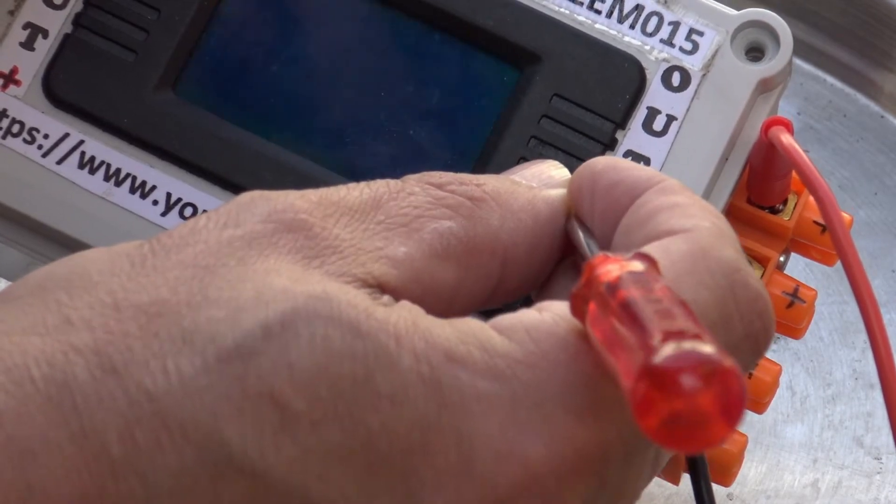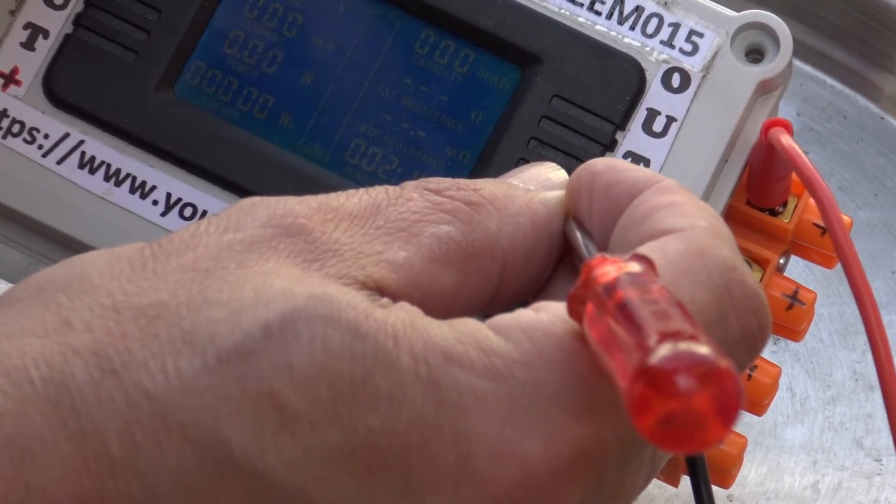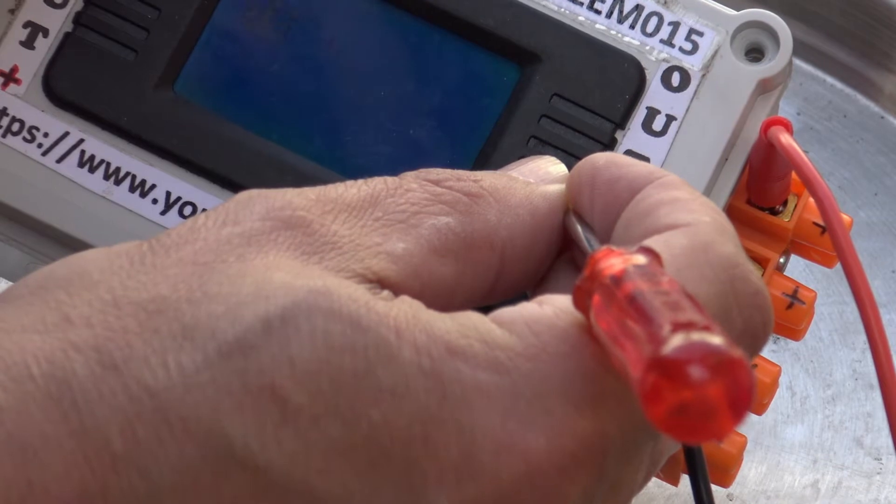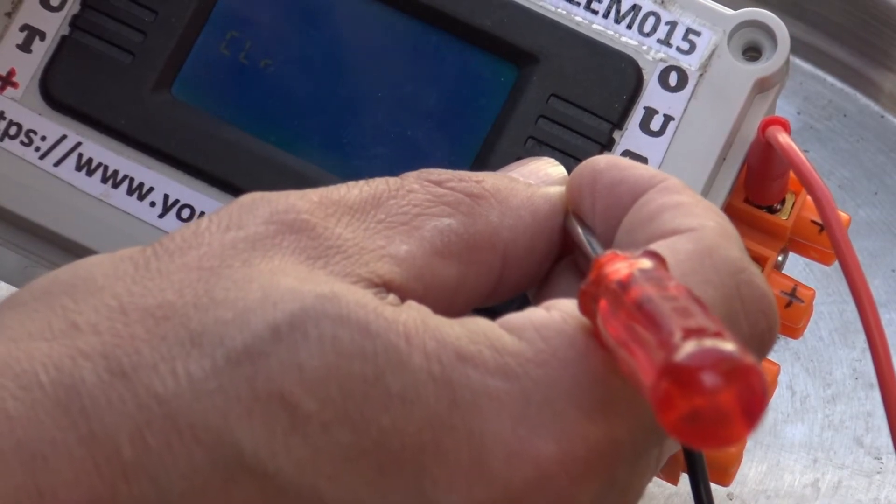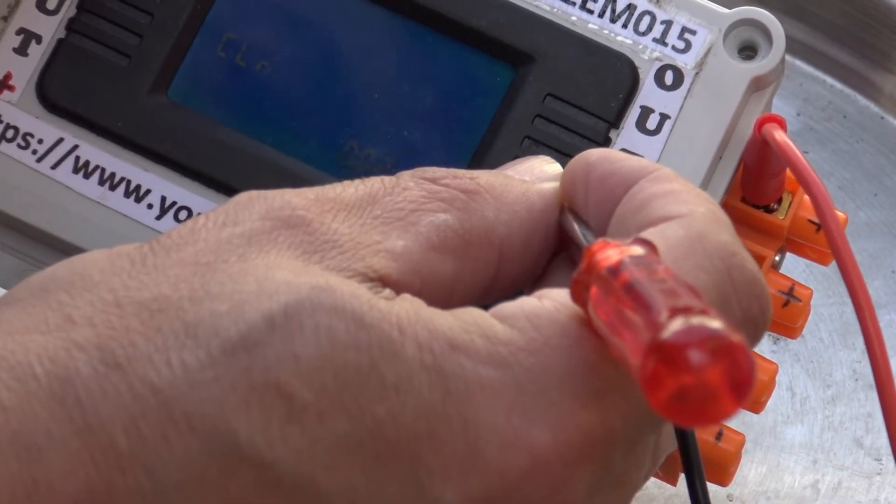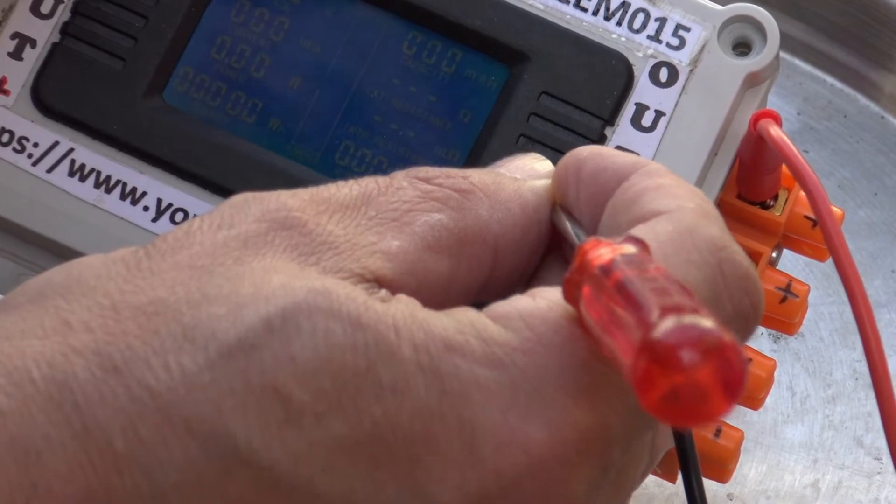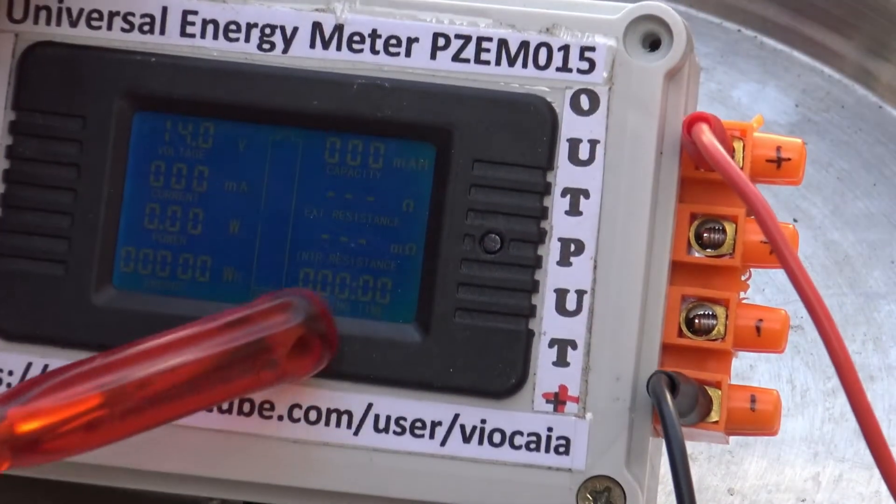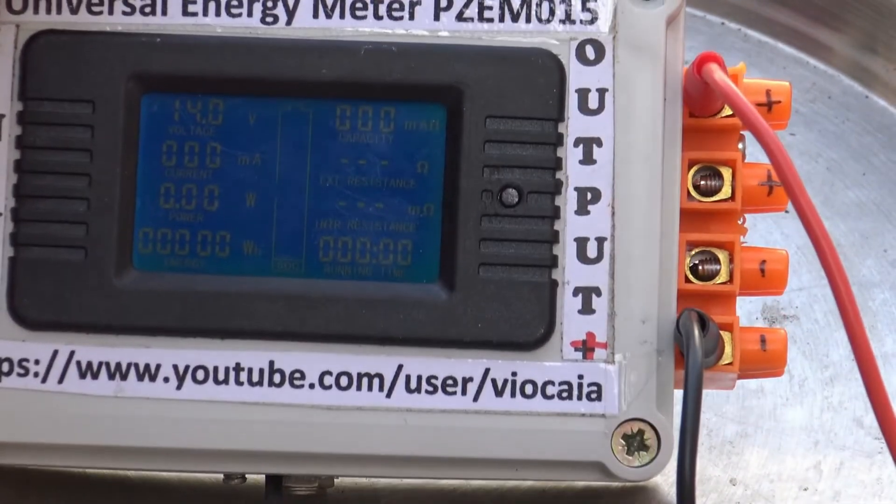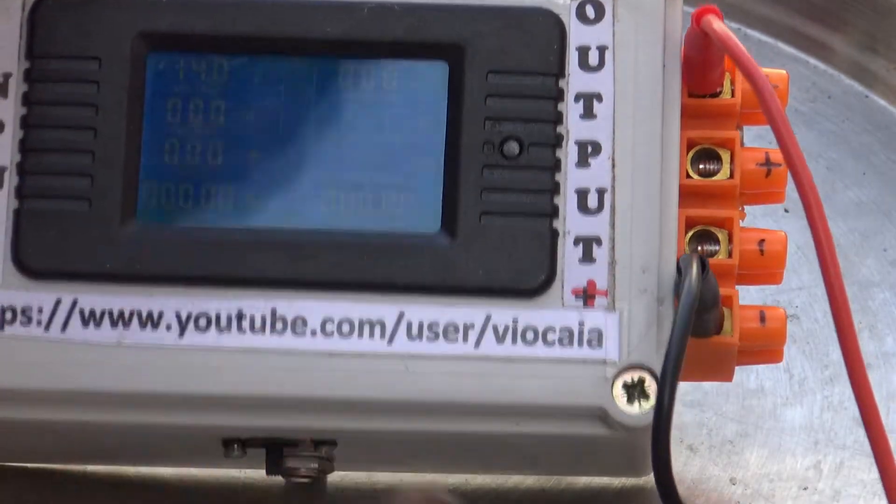And then reset also the amperage, the current meter or counter, in fact. Okay, and the last one, the timer, to zero. What's nice about the PZM 015 is that the timer is only running when it feels the current. You see the timer down here, it's only running when it feels the current in the circuit.